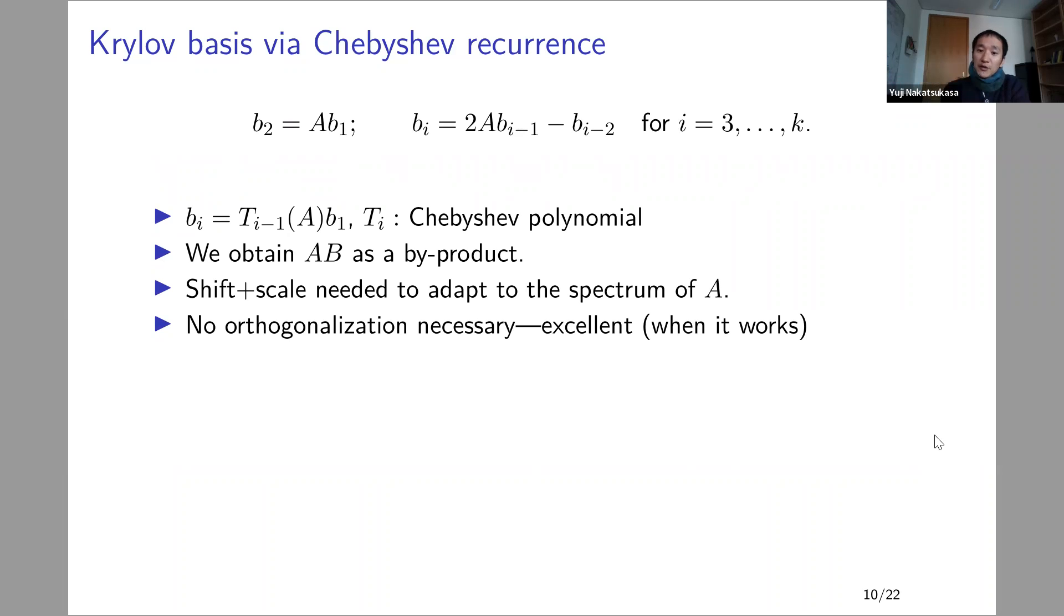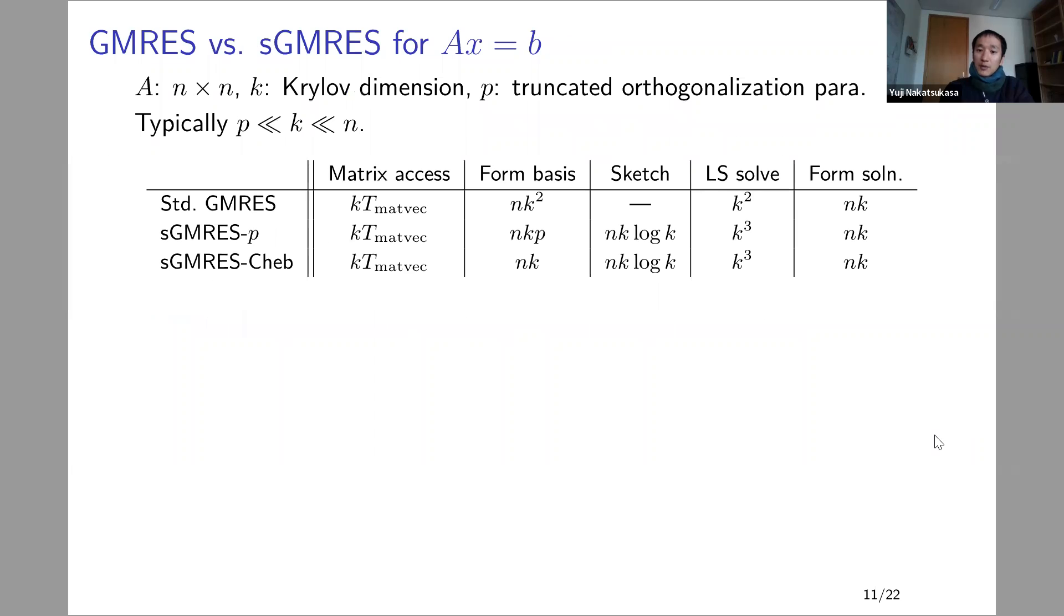I do want to highlight that this is only a hack, and it's not guaranteed to work. In fact, there are cases where it does not work. But it turns out to work better than we thought. There are even better alternatives when it works based on, for example, Chebyshev recurrence. This doesn't even need to orthogonalize anything. If you know that the eigenvalues lie in a certain interval, and the eigenvalues happen to be distributed more or less uniformly, then Chebyshev recurrence is another great way of forming the basis.